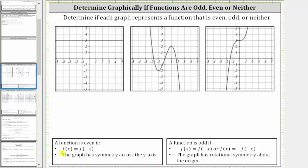A function is even if f of x equals f of negative x, and the graph has symmetry across the y-axis. If a graph has symmetry across the y-axis, we can fold the graph across the y-axis and the two halves match up perfectly.